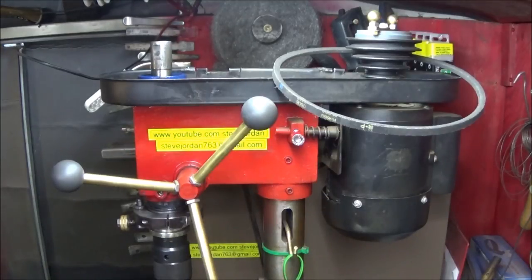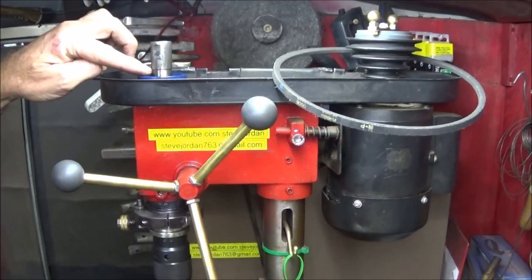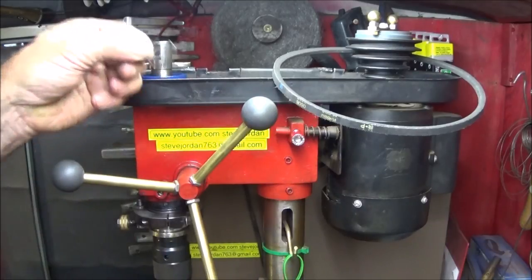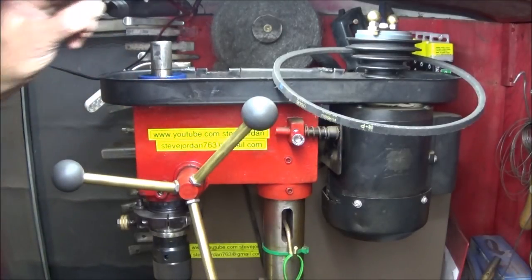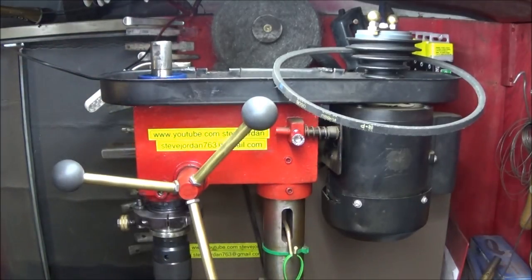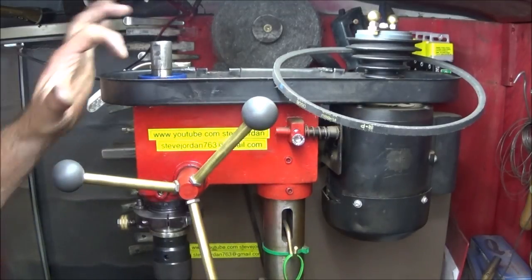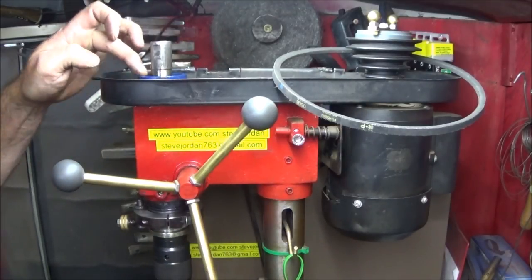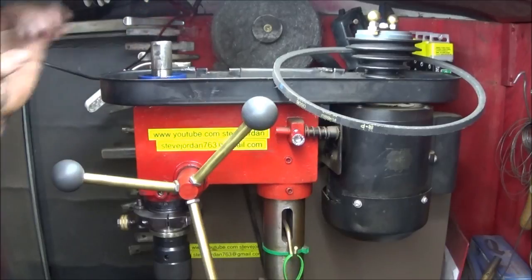Under that one you'll find that there's a circlip. I've taken it off earlier and then you can actually look down inside and see the shielded bearing.